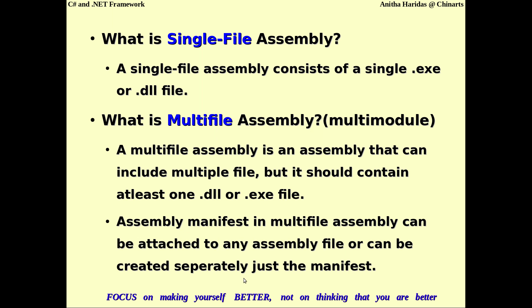In a single file assembly, the manifest will be available inside the .exe or .dll file. But in a multi-file assembly, since you may have more than one .exe or .dll file, the manifest can be attached to any one of the files. You can also have the manifest as a separate file — that is also allowed in the multi-file assembly.